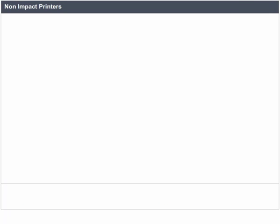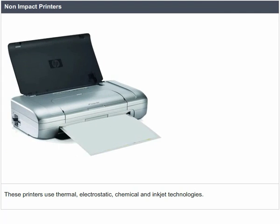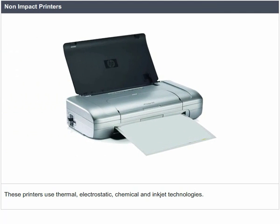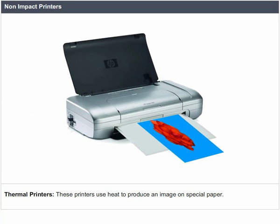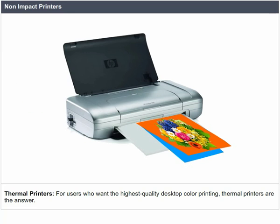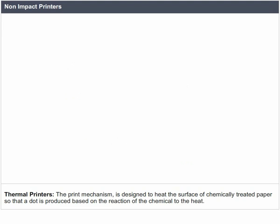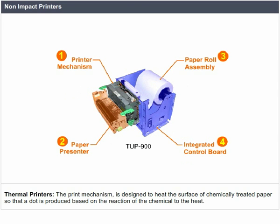Non-impact printers: These printers use thermal, electrostatic, chemical, and inkjet technologies. Thermal printers use heat to produce an image on special paper — no ribbon or ink is involved. For users who want the highest quality desktop color printing, thermal printers are the answer. The print mechanism heats the surface of chemically treated paper so that a dot is produced based on the reaction of the chemical to the heat.